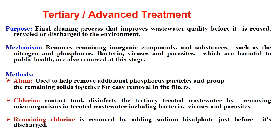The methods in tertiary treatment include alum, which is used to remove additional phosphorus particles and group remaining solids together for easy removal in the filter. Chlorine is used to disinfect the treated water by removing microorganisms including bacteria, viruses, and parasites. So chlorine is used for this disinfection treatment.